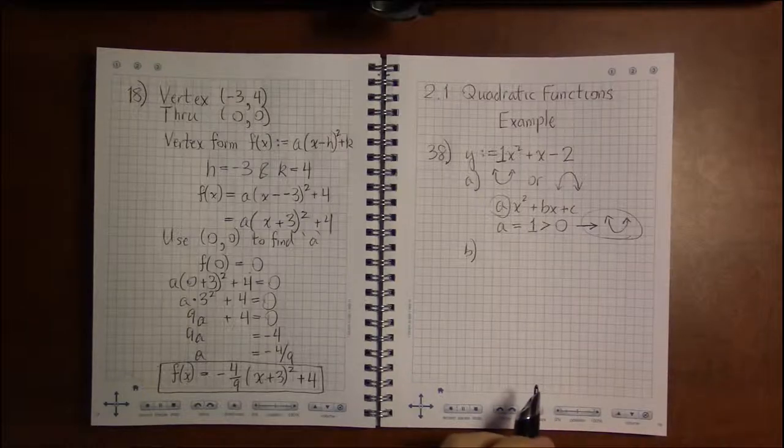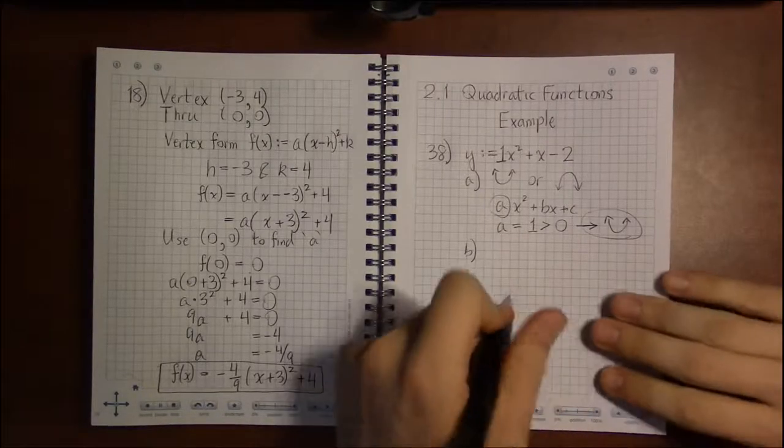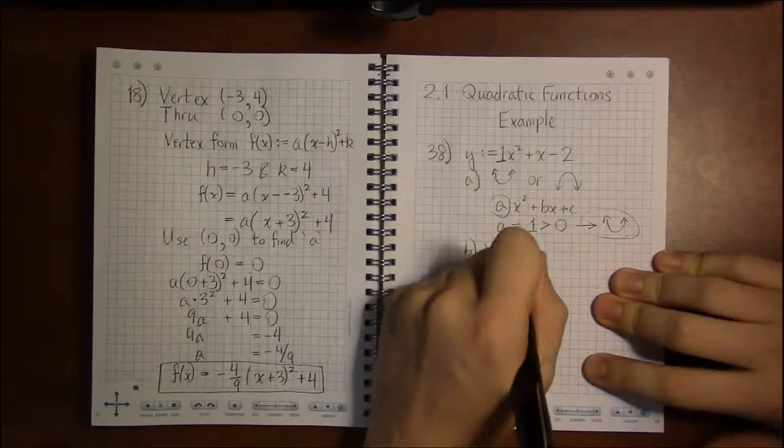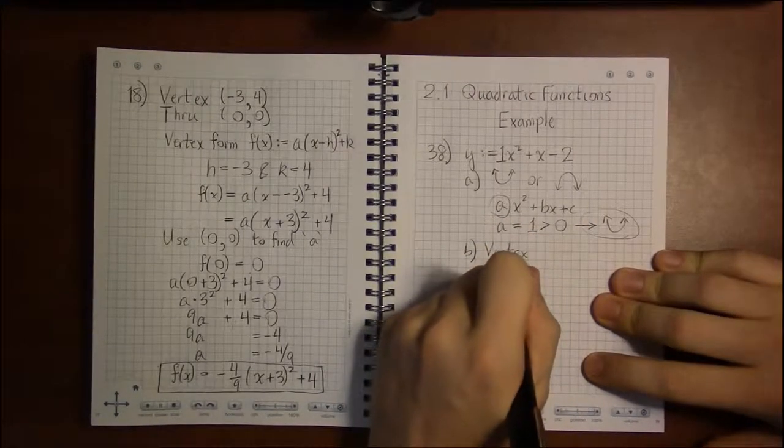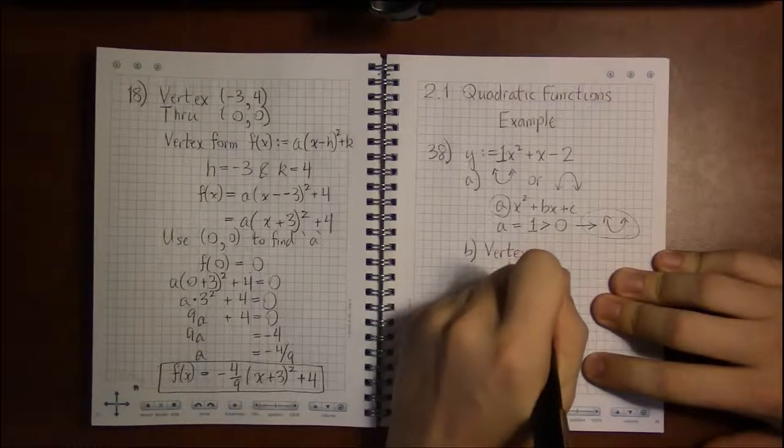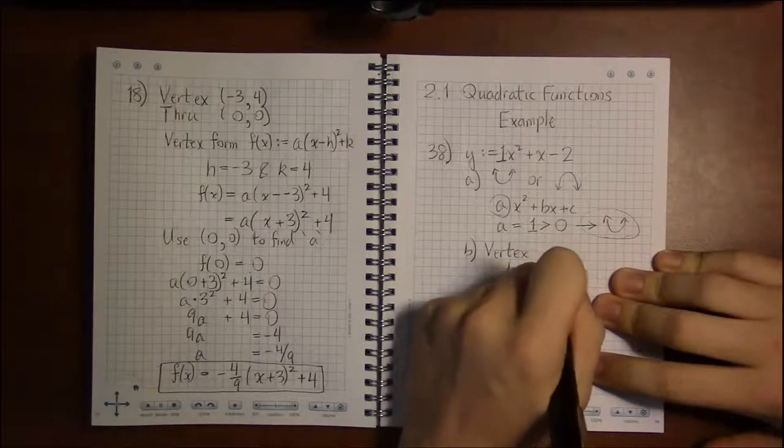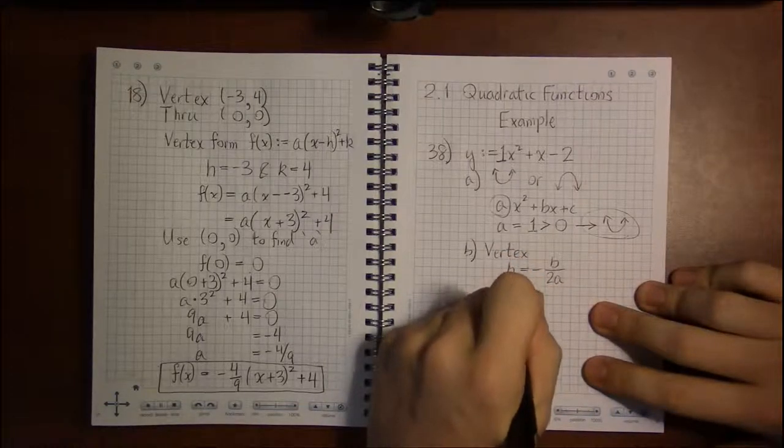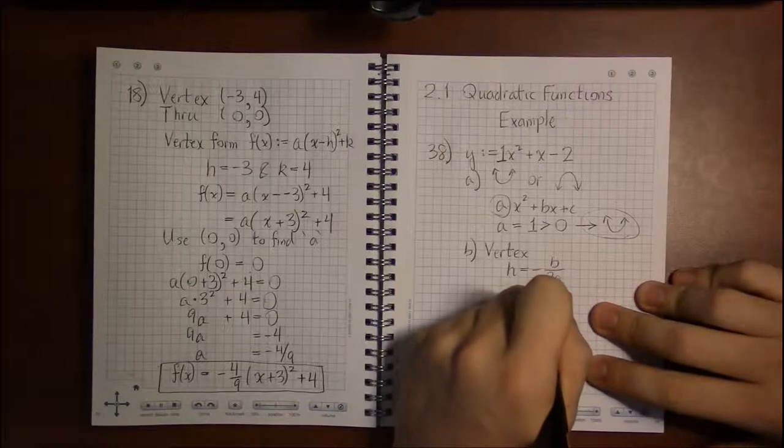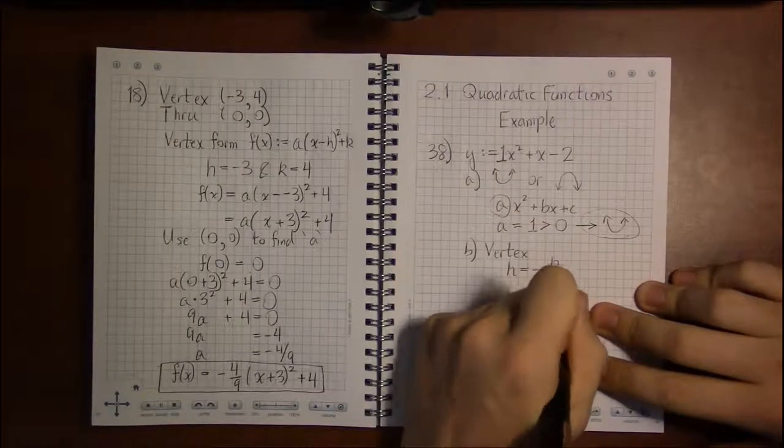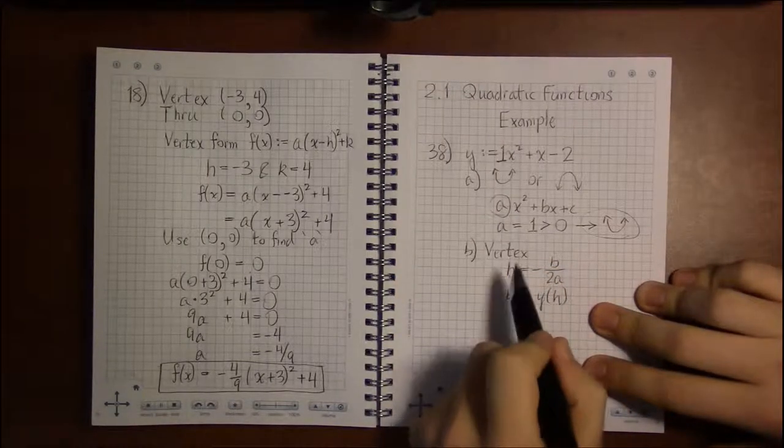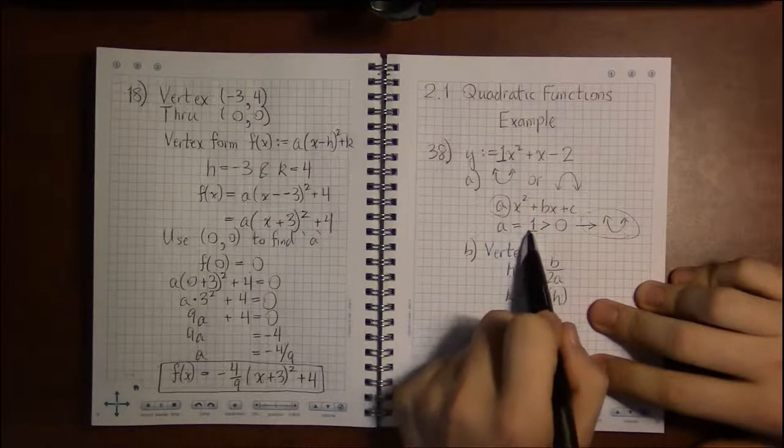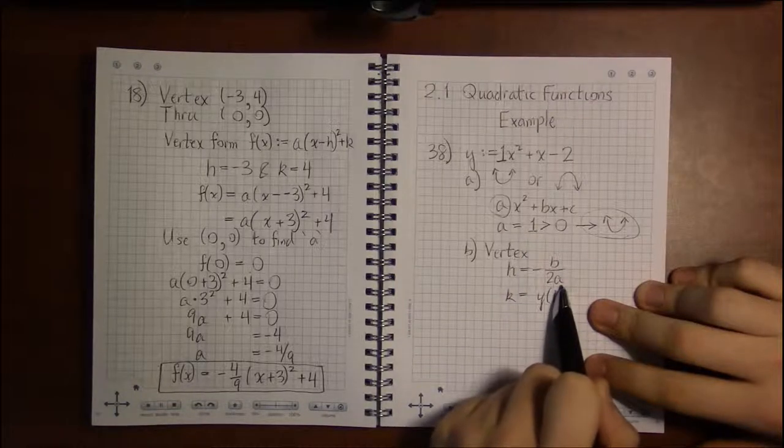Next thing we're told to find out is the vertex. To find the vertex we're going to need the formulas that h is minus b over 2a and k is y of h. Just plug in h in for x. So we figured out what a was in the last part. A was 1.